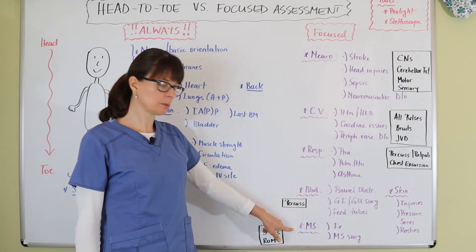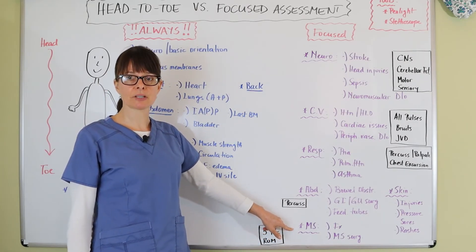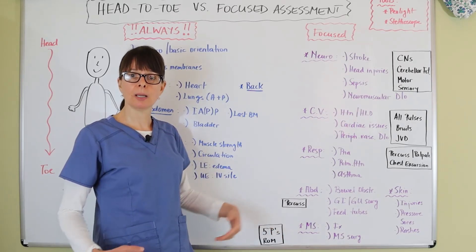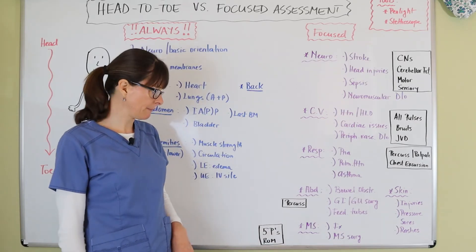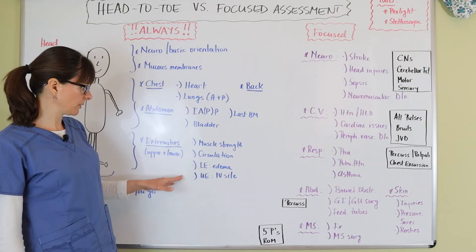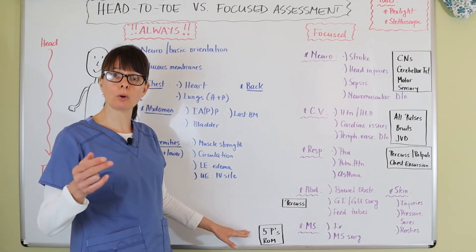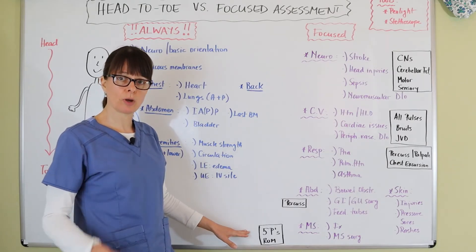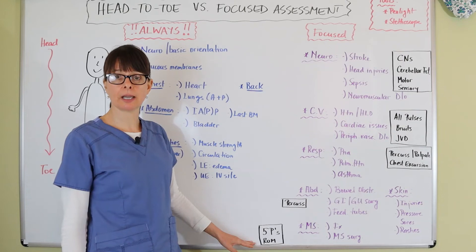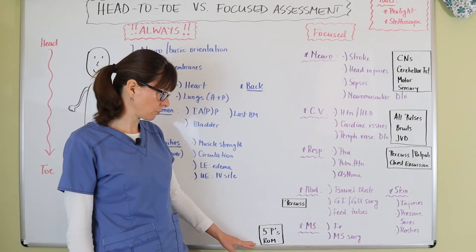For a patient with a musculoskeletal problem — such as somebody with a fracture, any kind of extremity injury, or musculoskeletal surgery like hip replacement or knee replacement — in addition to assessing all the things in the extremities section, we also want to assess their five P's: pain, pallor, pulse, paresthesia, and paralysis, as well as range of motion if it's indicated for the injured or even the non-injured extremity so we can compare left to right.